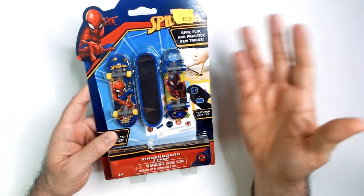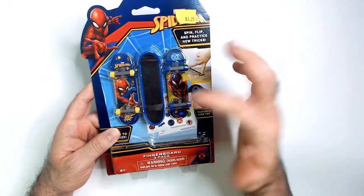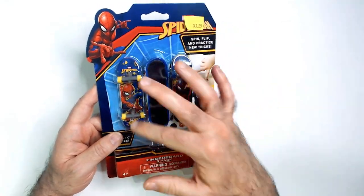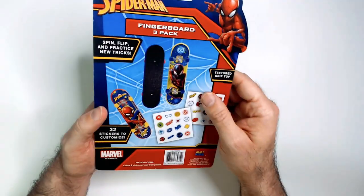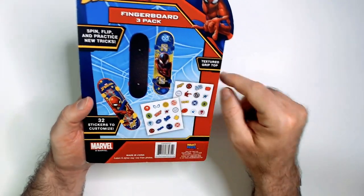So grabbed this for $3.25, thought that was a pretty good deal since the Dollar Tree sells like one with a ramp for a dollar twenty-five. So we got all three here. Spin, flip, practice new tricks. 32 stickers to customize, so we got some stickers you can put on the boards. All right, let's check it out.